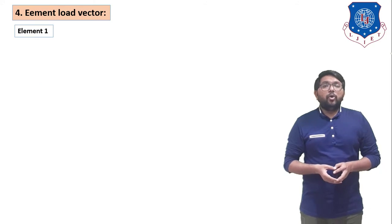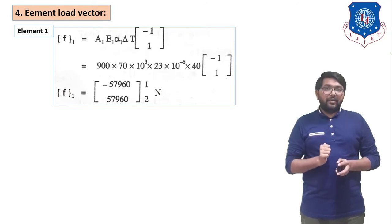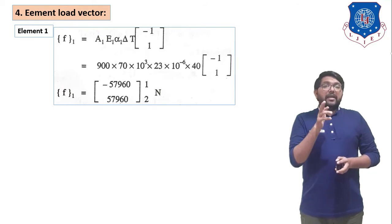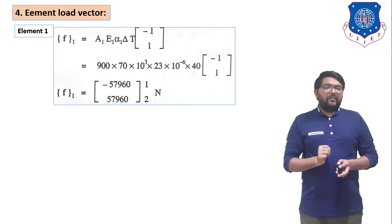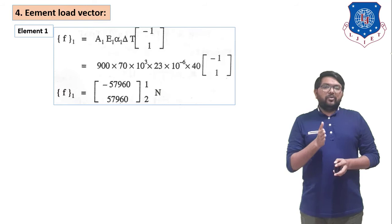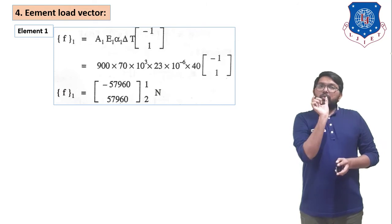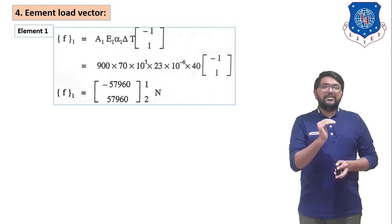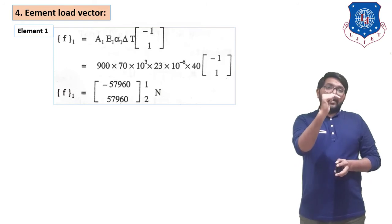Now find the element load vector for element 1 due to temperature effect. The equation is: F₁ = A₁E₁α₁ΔT × [−1; 1]. Substituting: 900 × 70×10³ × 23×10⁻⁶ × 40 × [−1; 1], we get F₁ = [−57960; 57960] N, with node indices 1 and 2.